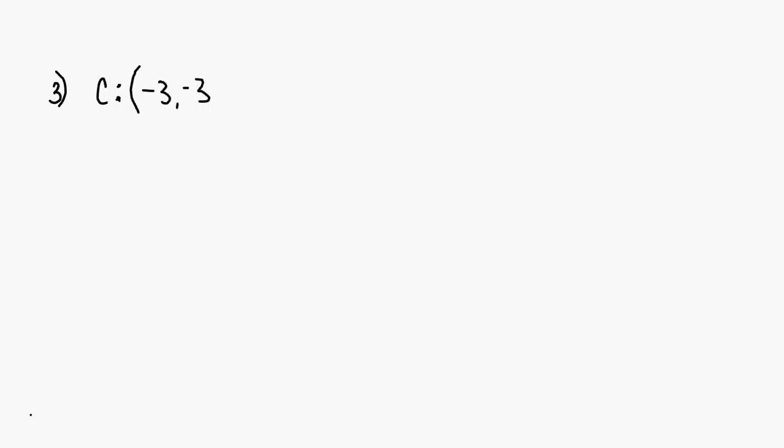Number three: what is the equation of a circle with the center at negative 3, negative 3, and passes through the point negative 2, 8? If you're given the center and a point and you're going to write it in standard form, you've got to find the radius. In order to find the radius, we talked about graphing this. So if you graph these two points — the center is at negative 3, negative 3.